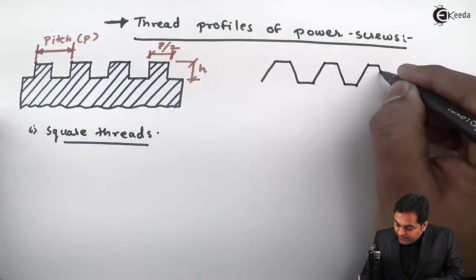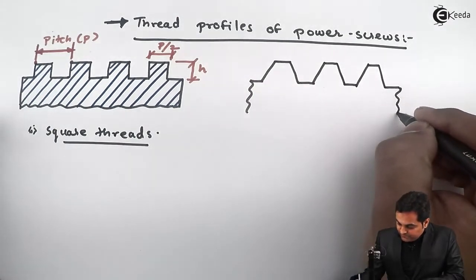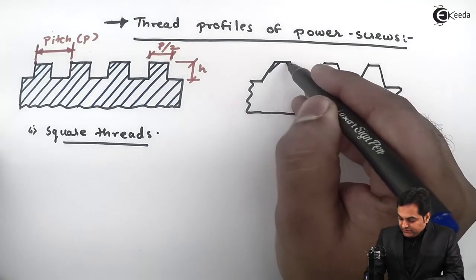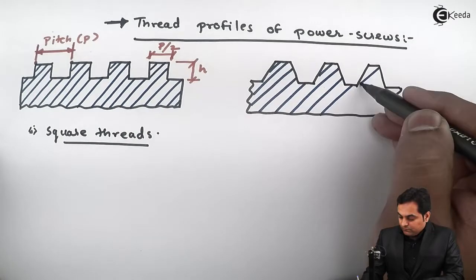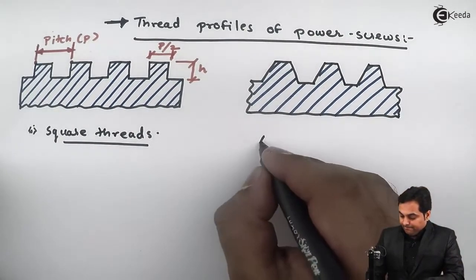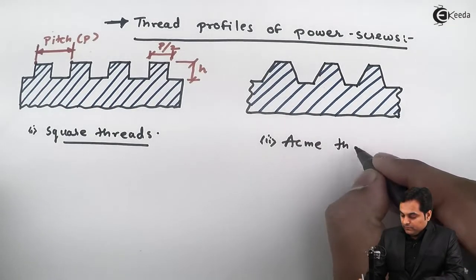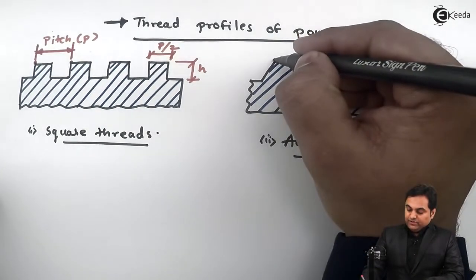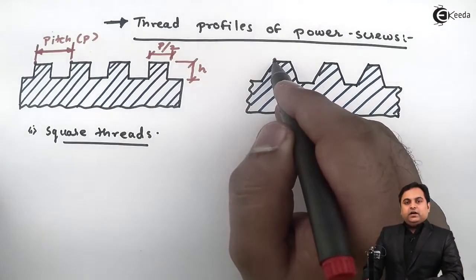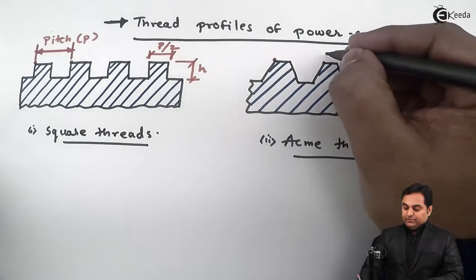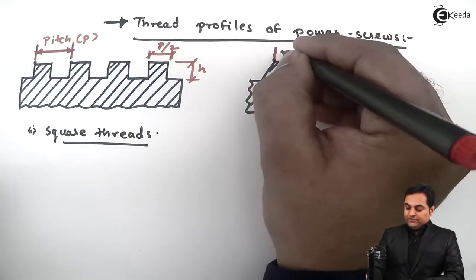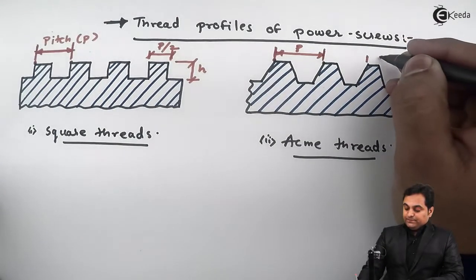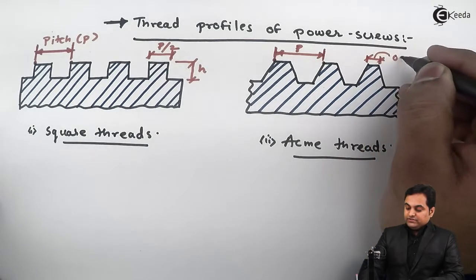The second commonly used profile is the acme thread. Here I am drawing the profile of acme threads showing the cut section. In acme threads, the pitch is measured the same way — the distance between the same point on two consecutive threads — denoted by small p, and this pitch remains the same throughout. The top surface of the thread is taken as 0.37 times the pitch.